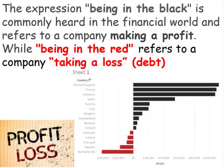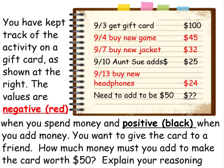The expression 'being in the black' is commonly heard in the financial world and refers to a company making a profit, while 'being in the red' refers to a company taking a loss. Black means profitable — positive. Red means loss — negative. Say you have a gift card. The values are negative (red) when you spend money, and positive (black) when you add money. You want to give the card to a friend — how much money must you add to make the card worth $50? By the end of this lesson, we'll be able to answer this type of question.